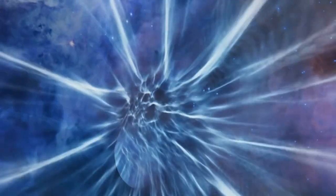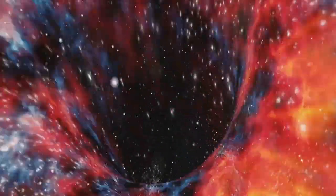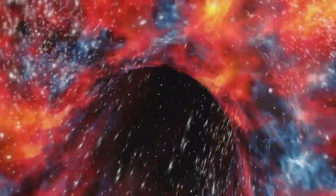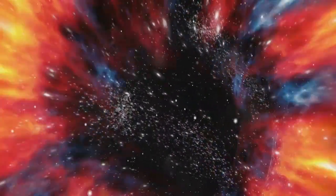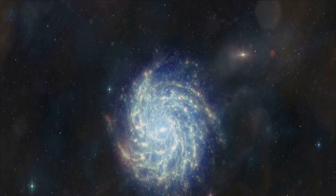Imagine a wormhole as a shortcut through the fabric of space-time. It's like folding a piece of paper in half and pushing a pencil through it. The two holes represent different points in the universe, and the pencil traces the path of a wormhole connecting them. These points could be billions of light-years apart, or they could be right next to each other.